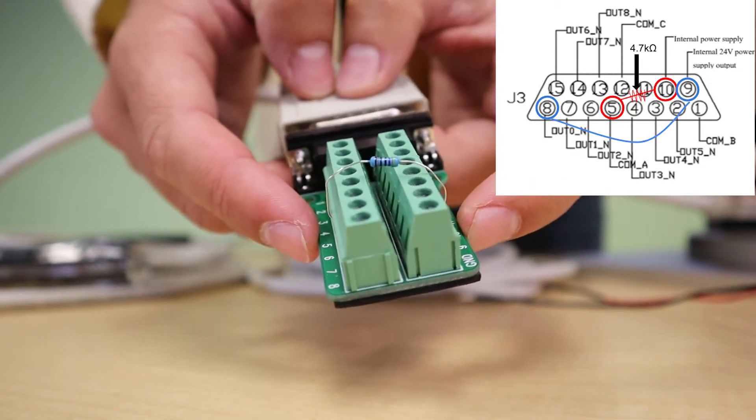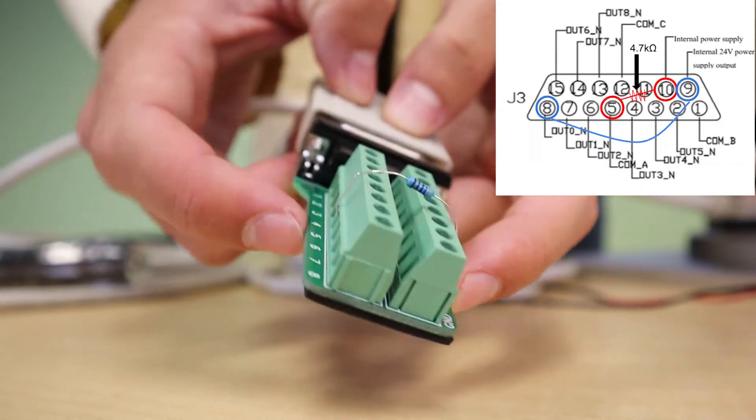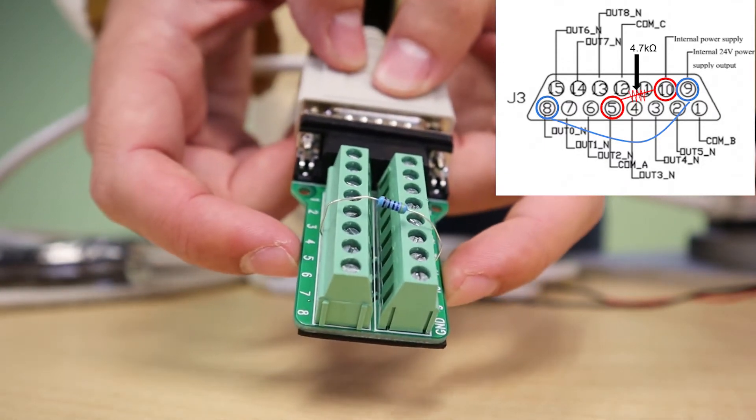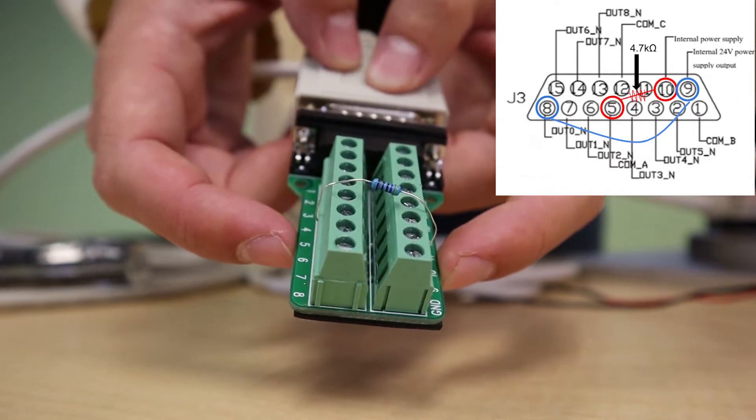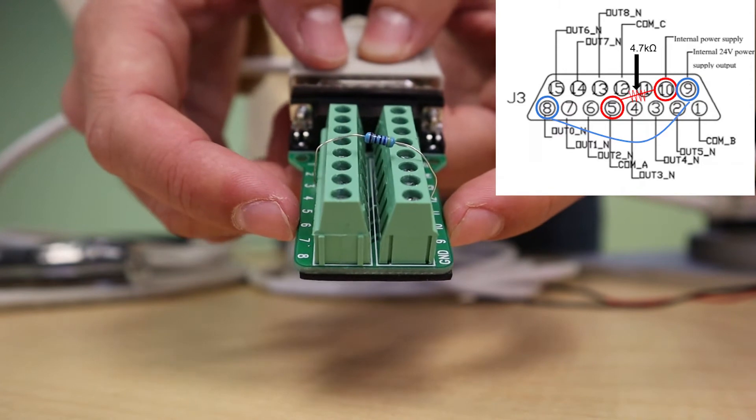Pin 10 is the internal power supply pin and pin 5 relates to common A which controls outputs 0, 1, and 2 which relate to pins 8, 7, and 6.